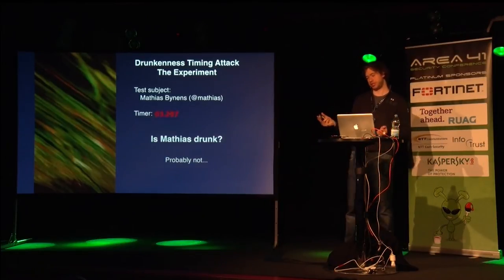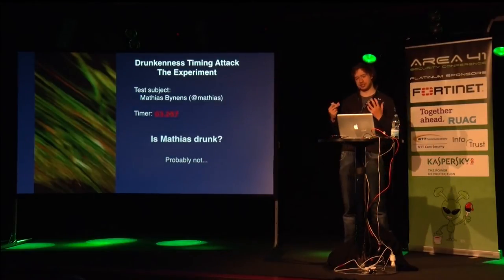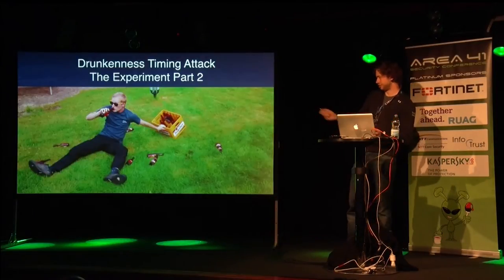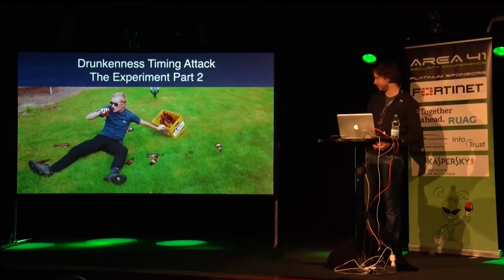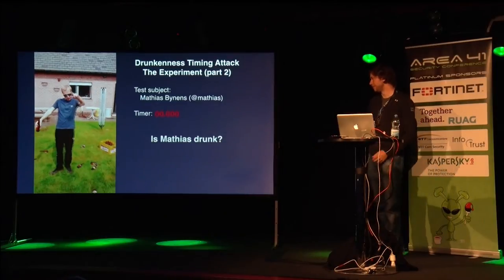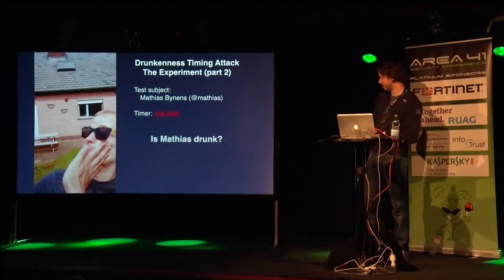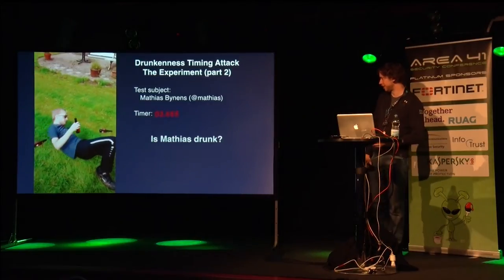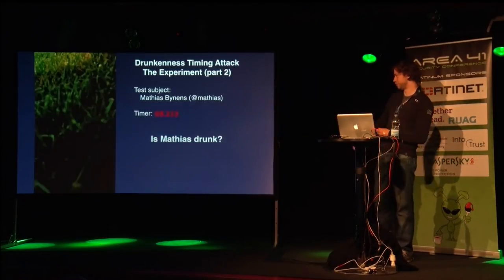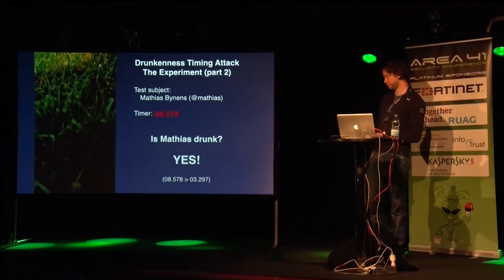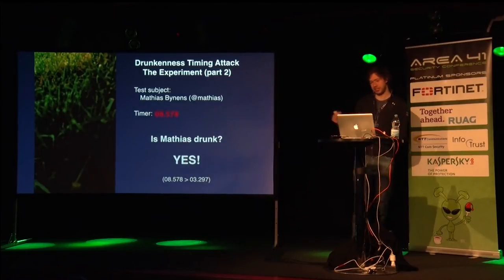That's just one measurement. In order to make sure this timing attack actually works, we need another timing measurement — and preferably Matthias would be drunk. So I gave him some nice Belgian beers, and after a few minutes, because he can't really hold his liquor, he was drunk. So I performed the timing attack again: I slapped him in the face, started my timer, and now you can see he has trouble getting up. It takes quite a while, but in the end he slaps me back — about eight seconds. So is Matthias drunk? Yes.